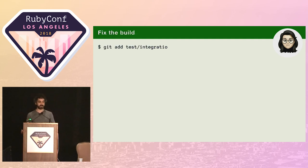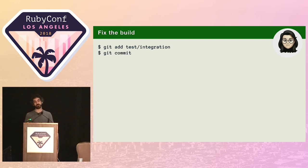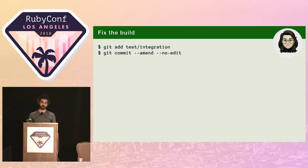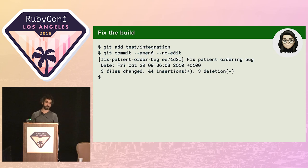So she updates the test and makes sure it passes before staging the changes ready to be committed. But when she runs git commit, she includes the amend option. So instead of creating a brand new commit, Git will amend the existing commit. That way, keeping all the changes related to the bug fix on a single commit. Because she's happy with the commit message and doesn't need to make any changes to it, she also uses the no-edit option, and Git amends the commit without prompting her.